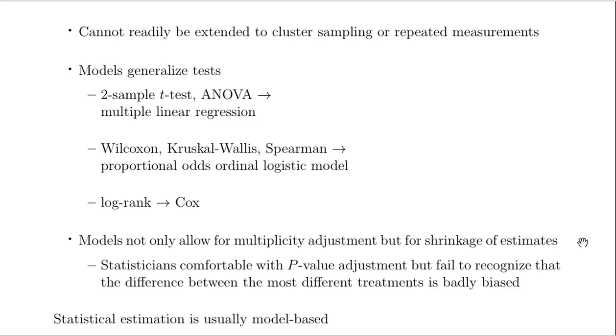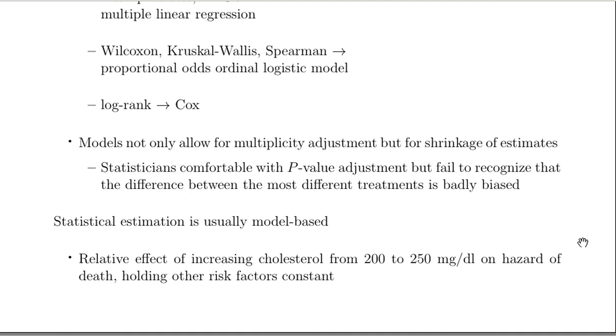If you look at p-value adjustment, that will handle multiplicity correction, but if you were to look at the difference between the most different treatments, if you had several treatments that were competing, that difference is a biased estimate of the difference of those two treatments. A random effects model could give you more realistic estimates. Statistical estimation is usually model-based, and in many cases, you cannot get an estimate without a model. If you wanted to know what is the effect of raising cholesterol from 200 to 250 milligrams per deciliter on the hazard of death, holding other factors constant, there's absolutely no way to get that without a model.